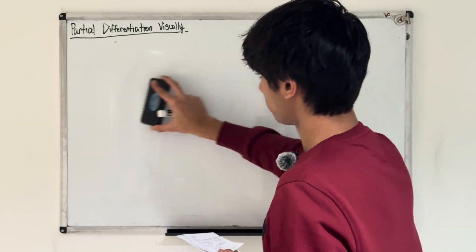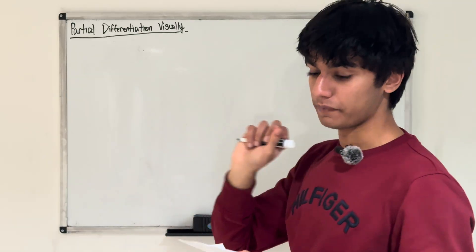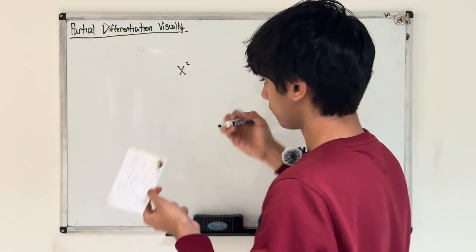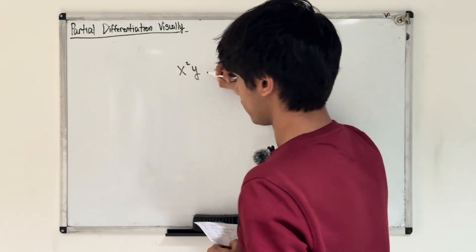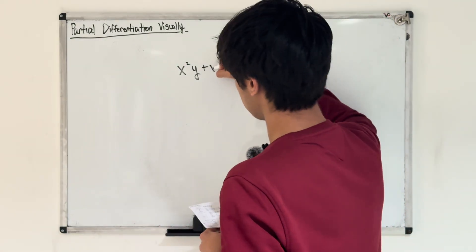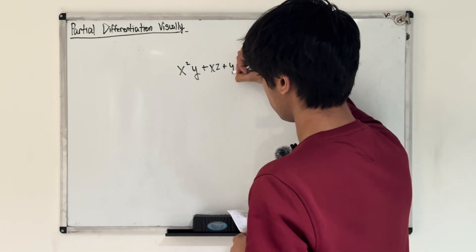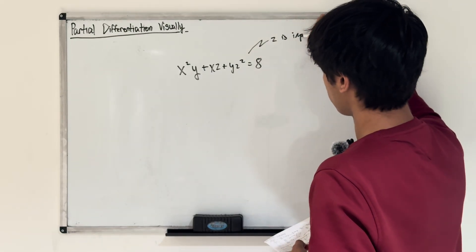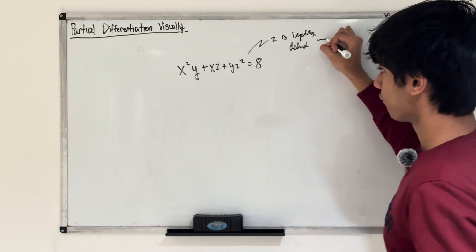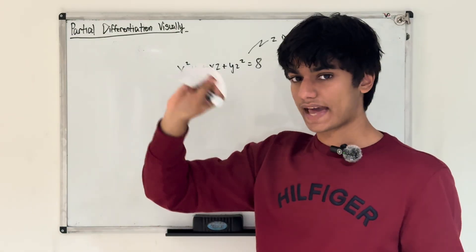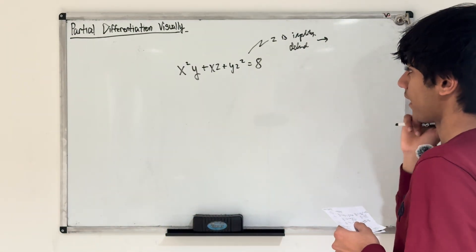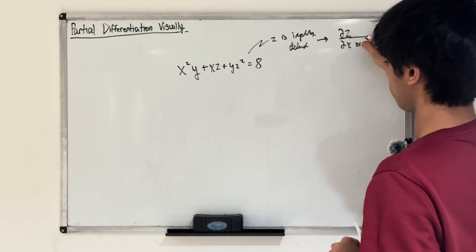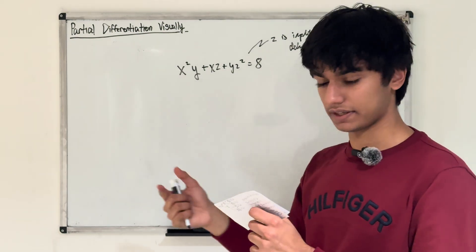Next, let's go over implicit partial differentiation. It's similar to regular implicit differentiation. The idea is if we have a function where we can't isolate z — where our dependent variable like z isn't by itself on one side — we use implicit differentiation. Whenever we take the derivative of z, just like we added dy/dx when doing implicit differentiation, here whenever we differentiate z, we add the partial ∂z/∂x or ∂z/∂y, depending on what we're differentiating with respect to.